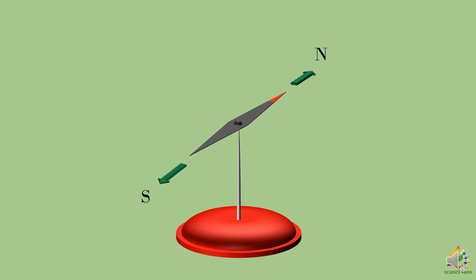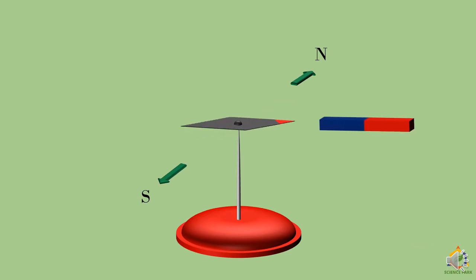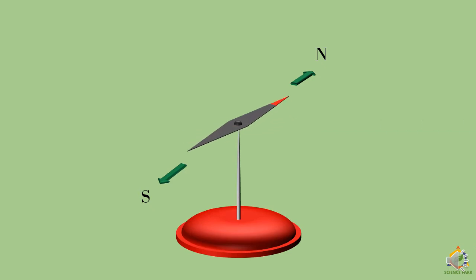This is a magnetic needle, and if we keep it suspended, it always aligns itself in the north-south direction. If I bring a bar magnet near it, it will change direction and align according to the position of the bar magnet. The south pole of the bar magnet is near the north pole of the magnetic needle — since north and south poles of different magnets attract each other, the needle aligns in another direction. Remove the magnet and it aligns north-south again. This is because of another magnet aligned in the north-south direction — that magnet is inside the earth.